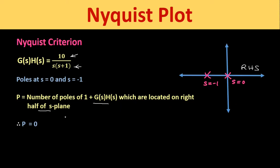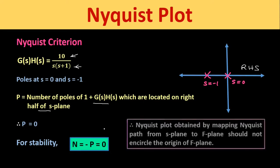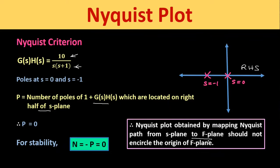Since the poles are not in the right half of the s-plane, for absolute stability the condition N = -P must be satisfied. Substituting P = 0 gives N = 0. That means the Nyquist plot obtained by mapping the Nyquist path from the s-plane to the F-plane should not encircle the origin of the F-plane.